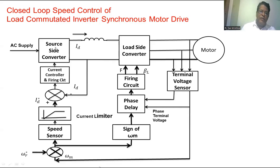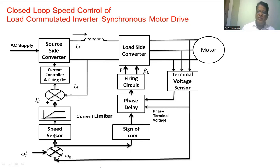For the source side converter, it is operated during transient operation such that the change in speed of the motor occurs at maximum torque, reducing the transient time period. In the closed-loop block diagram of the source side converter, the terminal voltage sensor gives the rotor speed, which is compared with the reference speed. The speed error is given to a PI speed controller. The output of the speed controller is given to a current limiter — the DC link current limiter. The output of the current limiter is Id*, the reference value for the DC link current. The DC link current is measured by a current sensor, and the error in DC link current is processed by the current controller, which generates the firing pulses to the source side converter.